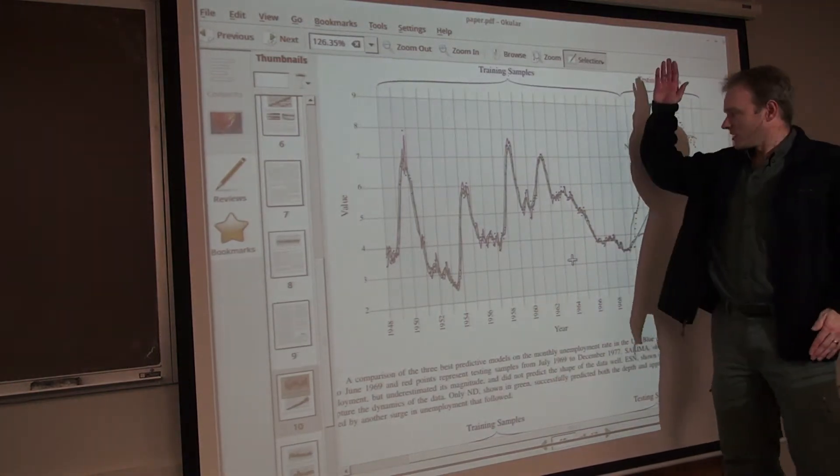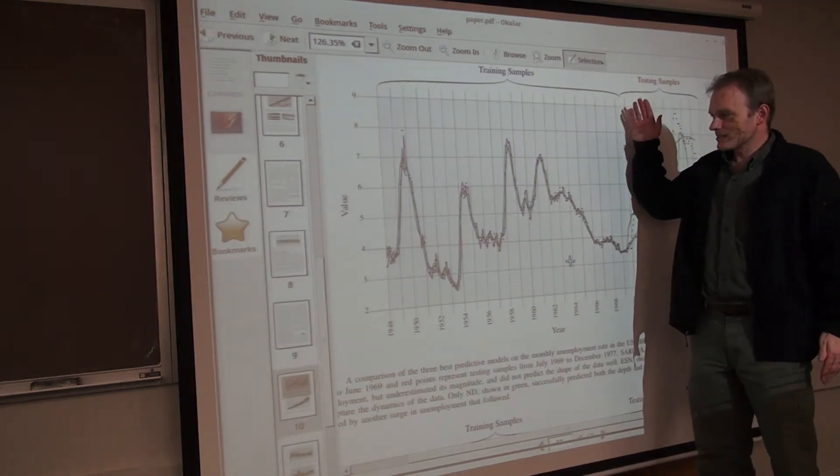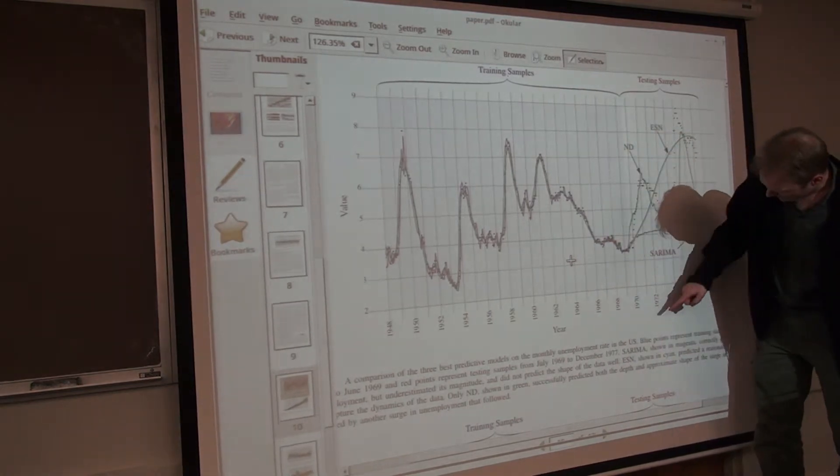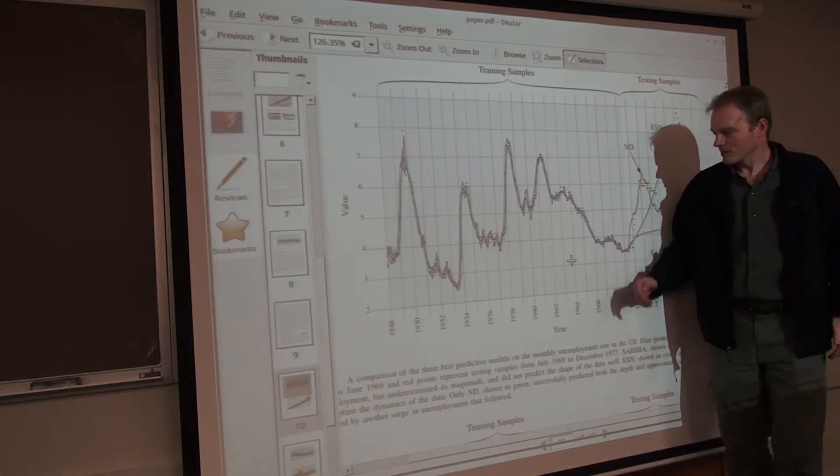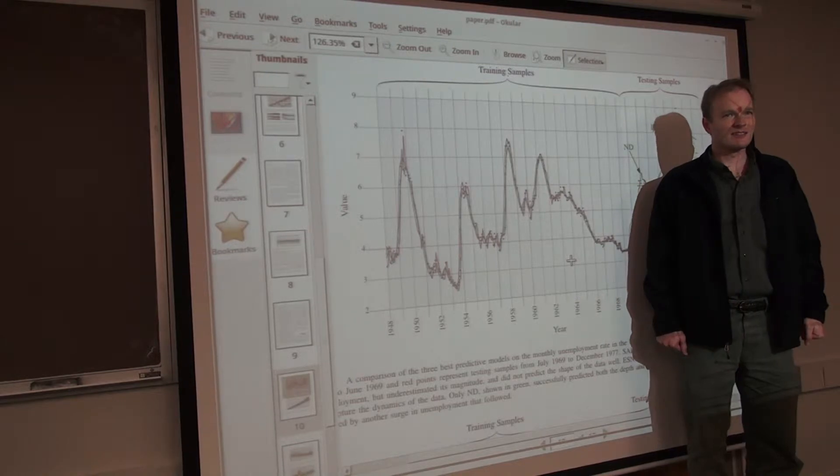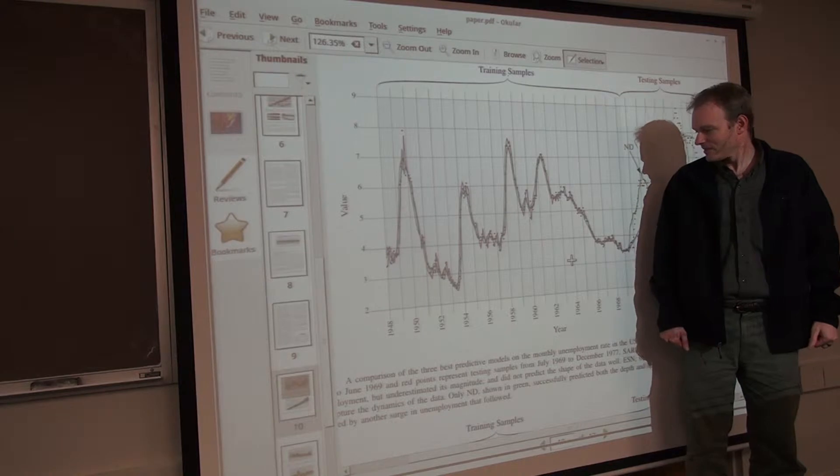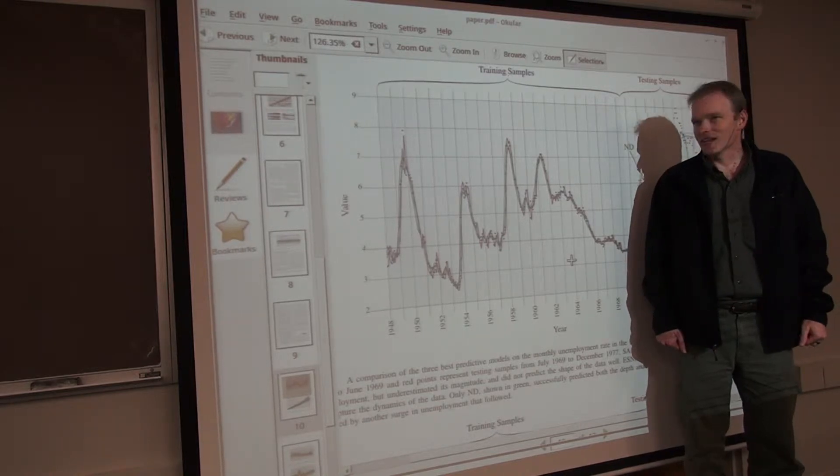Now let's suppose for example that this part were blocked off. You couldn't see this. This is all you had is the history of what happened up until 1969. What do you think is going to happen next using all the intelligence of your human brains? It just slowly increases.